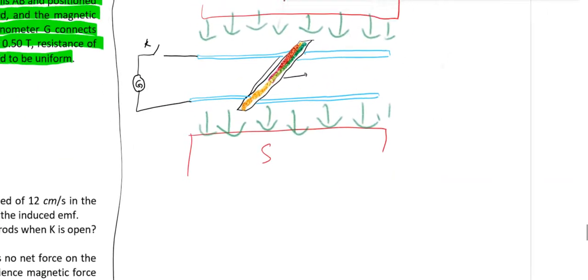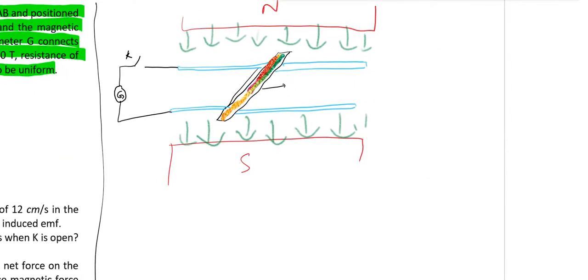So if I want to describe everything in vector form, I would say that B is minus B j-cap, because it is downward. The rod is moved in positive x direction, so we may take V to be V i-cap. And if we label this end as Q and this one as P, we can say that PQ is minus PQ k-cap.